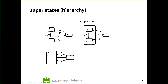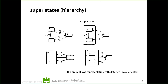Another thing I can do is that in some cases I'm not interested in the details inside D, so I just omit them and have the representation of the big state D — or I can say that inside D there are two states A and C but not provide details about what happens inside. So hierarchy allows representing systems with different levels of detail.